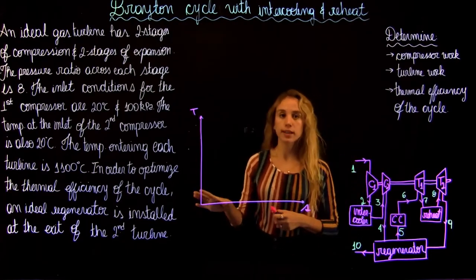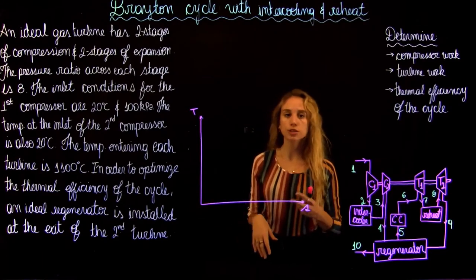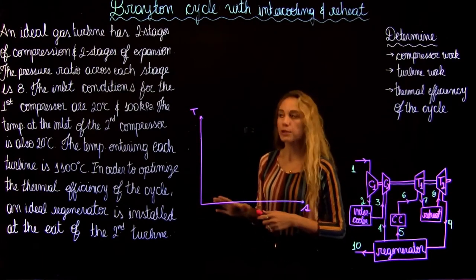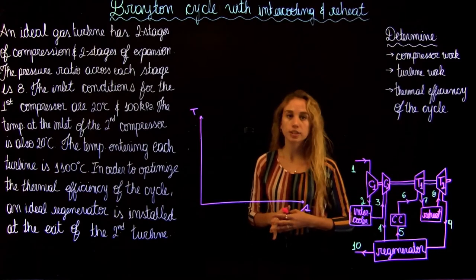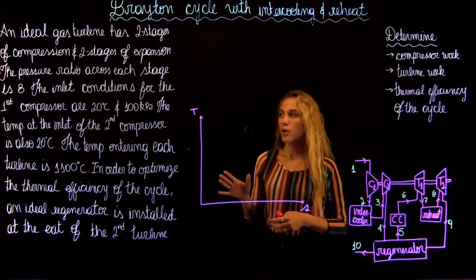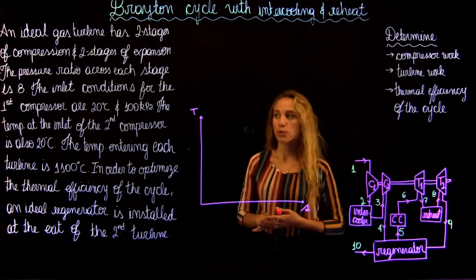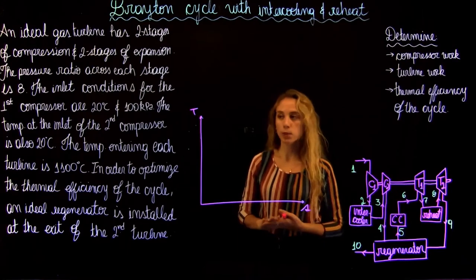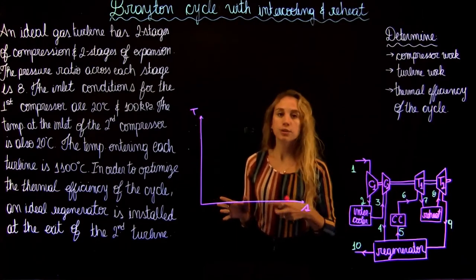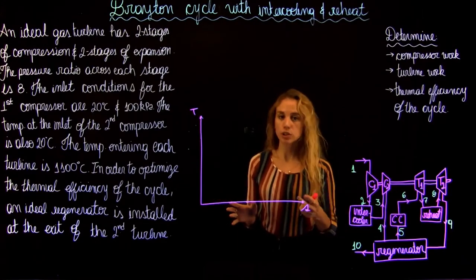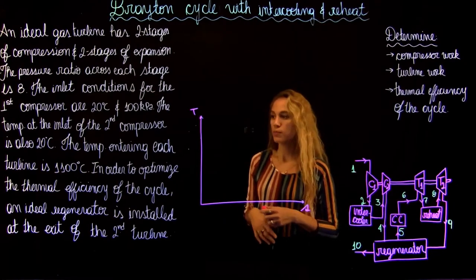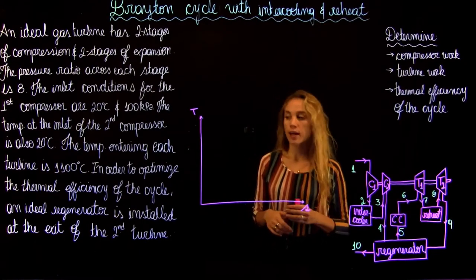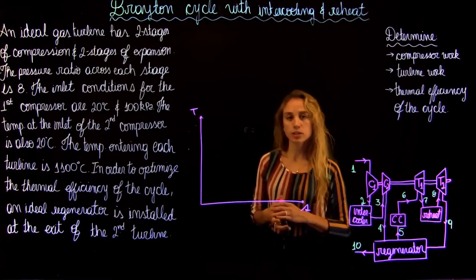We have an ideal gas turbine that has two stages of compression and two stages of expansion. The pressure ratio across each of the stages is 8. The inlet conditions for the first compressor are 20 degrees Celsius and 100 kPa, and the inlet temperature of the second compressor is also 20 degrees Celsius. The temperature entering each of the turbines is 1100 degrees Celsius.